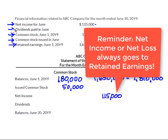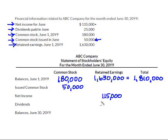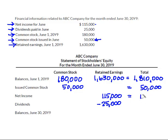Did I pay dividends? I paid dividends in the amount of $25,000. And remember that when I paid the dividends, I paid that out of my retained earnings — in other words, the earnings of the business that I held on to from the previous accounting period. So that becomes a negative. I'm going to carry my totals over: common stock issued $50,000, net income $115,000, and dividends in parentheses — that's a negative $25,000.